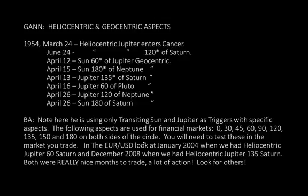The following aspects are used for financial markets: 0, 30, 45, 60, 90, 120, 135, 150, and 180 degrees on both sides of the circle. I know there are other ones out there — Luther Jensen mentions the quintile group and others — but we're talking about this specific application. You will need to test these in the market that you personally trade.